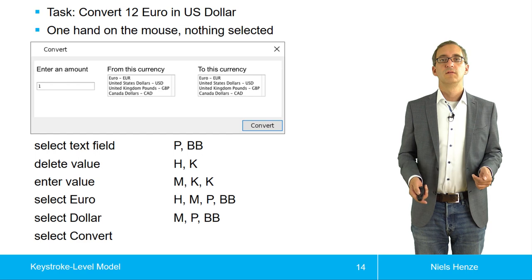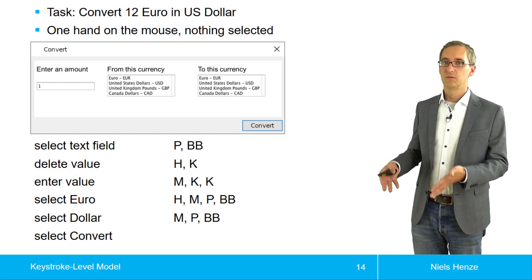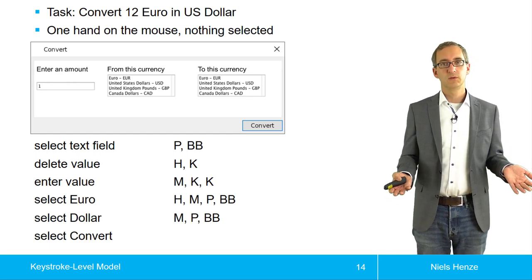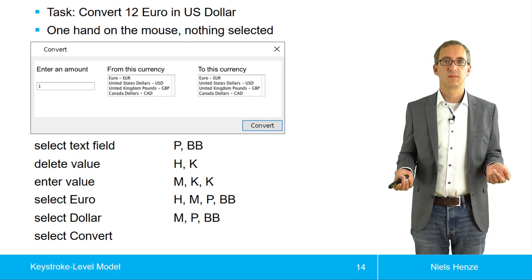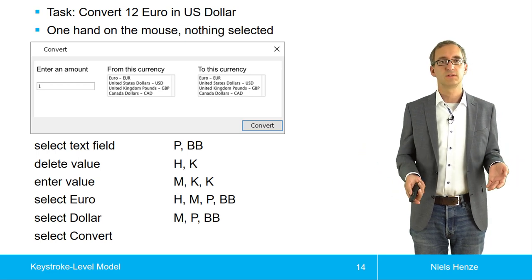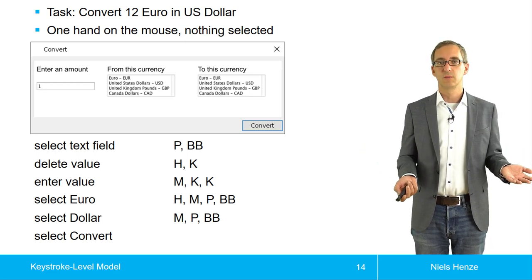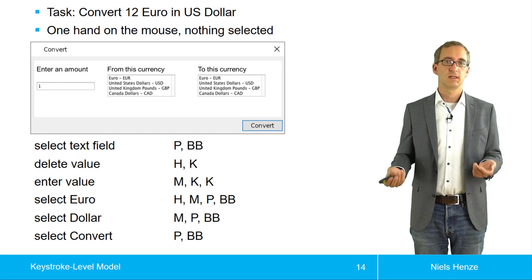Finally, we want to press convert. This is the only button left that hasn't been clicked, and there is no choice, so we just assume there is no mental operation. It's just pointing and clicking.